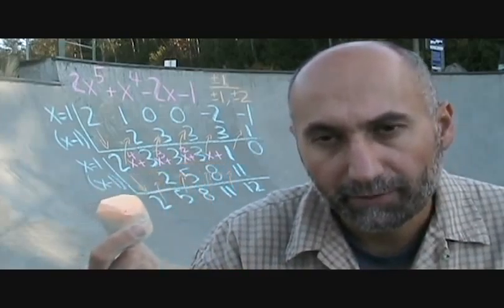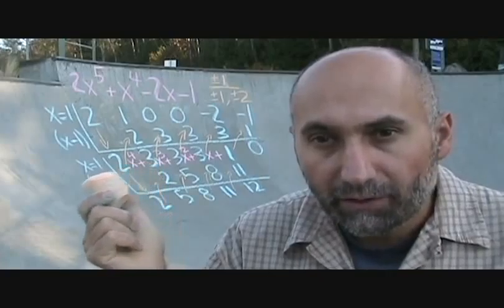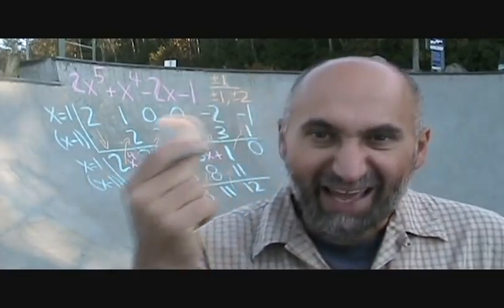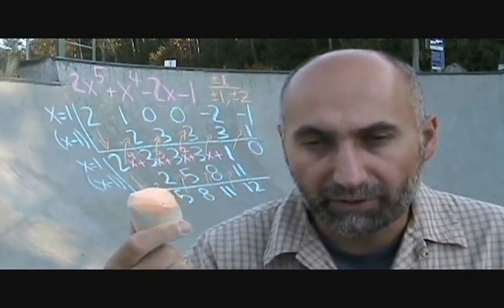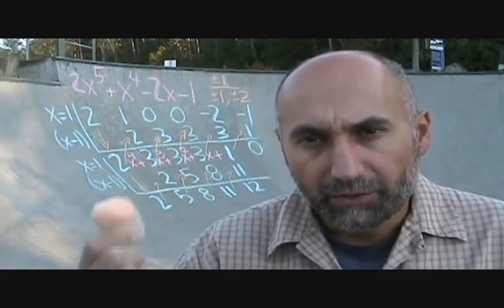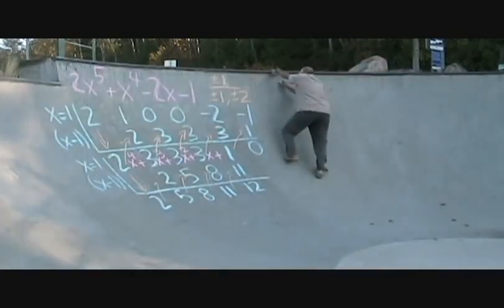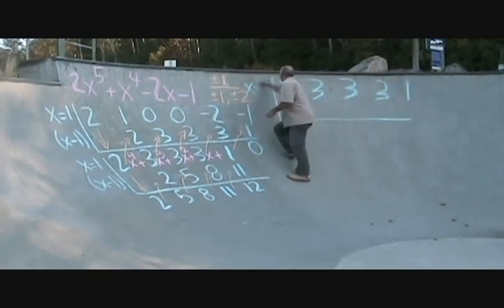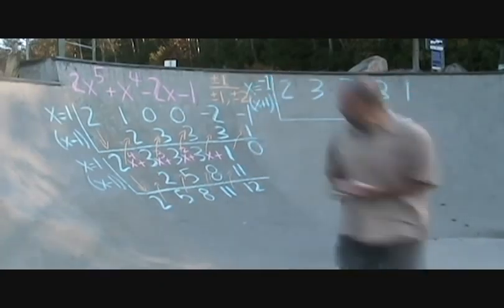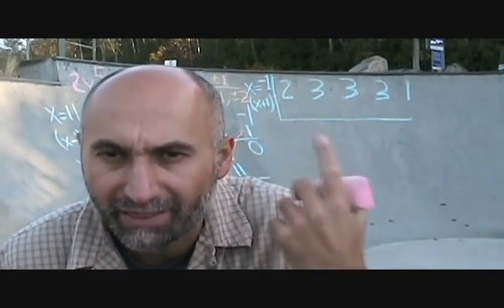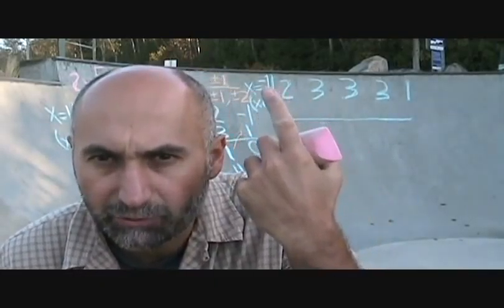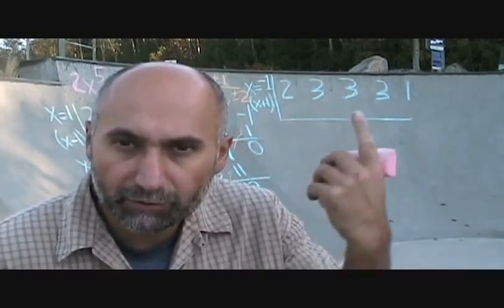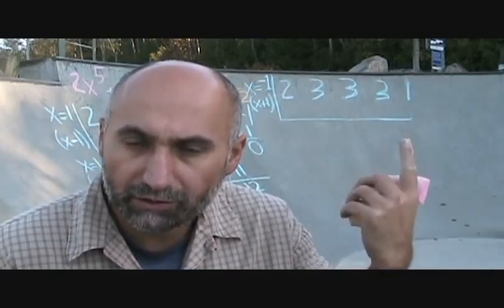We've already tried x equals 1 as a possible factor of this polynomial. Now we'll transfer all the coefficients and try x equals negative 1, which means testing whether x plus 1 is a factor. The 2 comes down, multiplies by negative 1, goes up, add them together, multiply by negative 1, and continue.